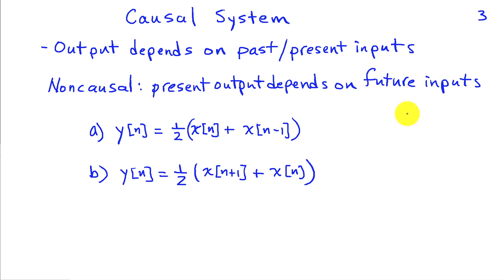I've got two examples here. In this first one, I'm going to say that y of n is 1 half x of n plus x of n minus 1. This says that the output at the present time depends on the present value of the input and a past value of the input. So this system is indeed causal.